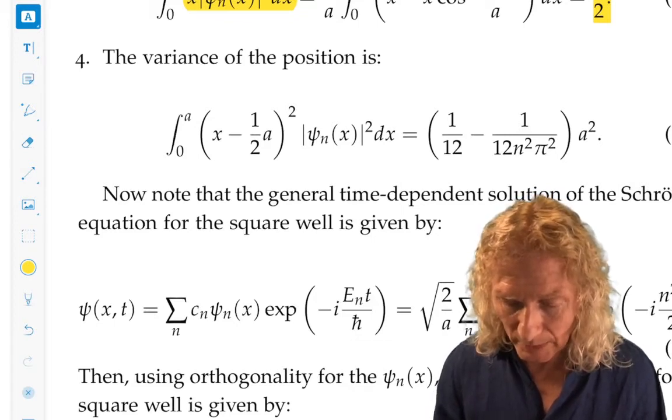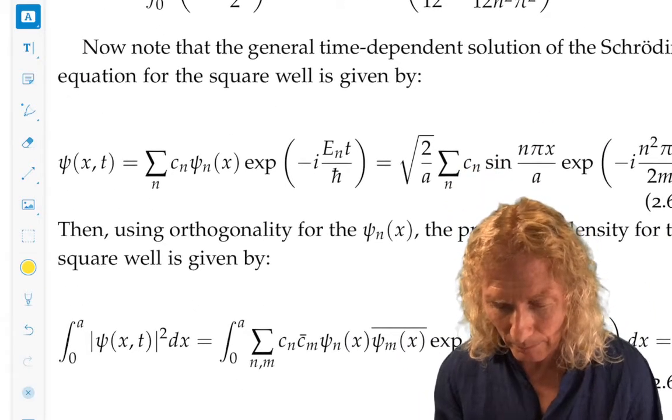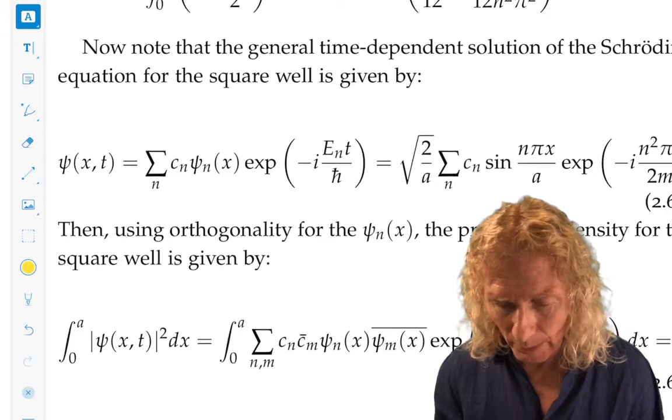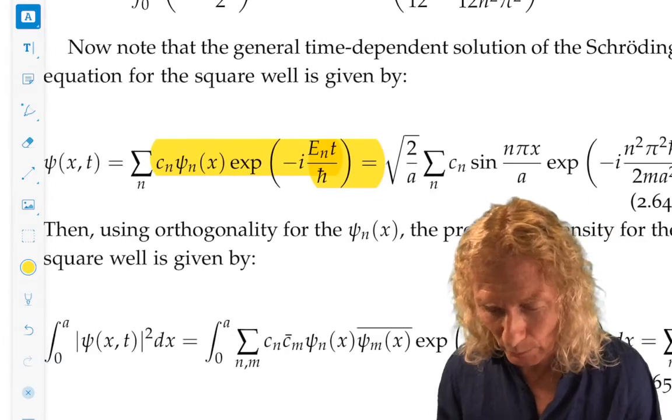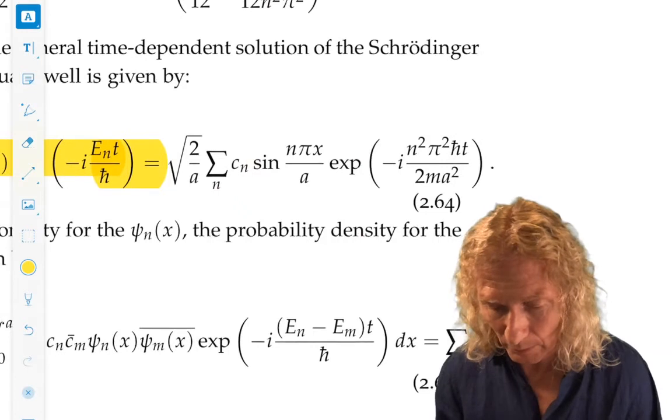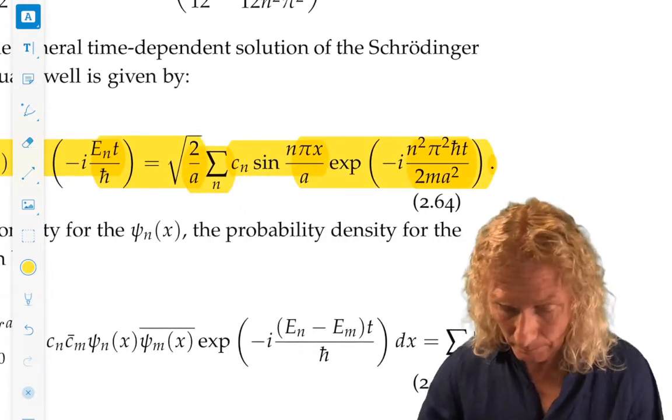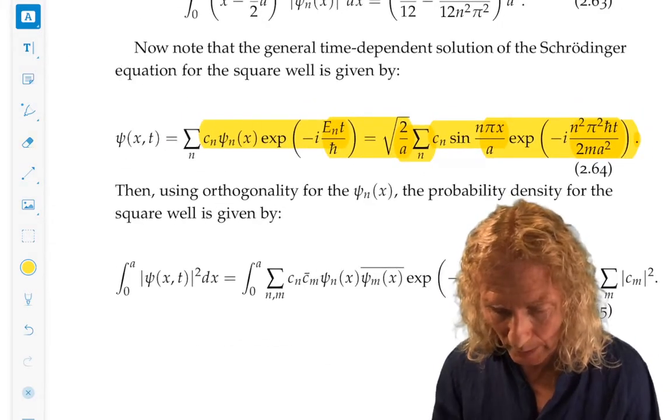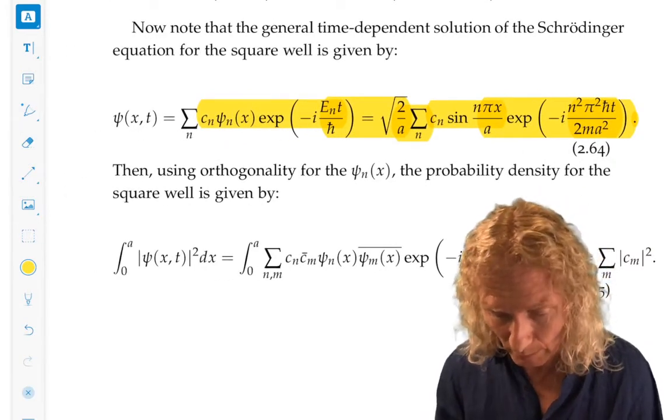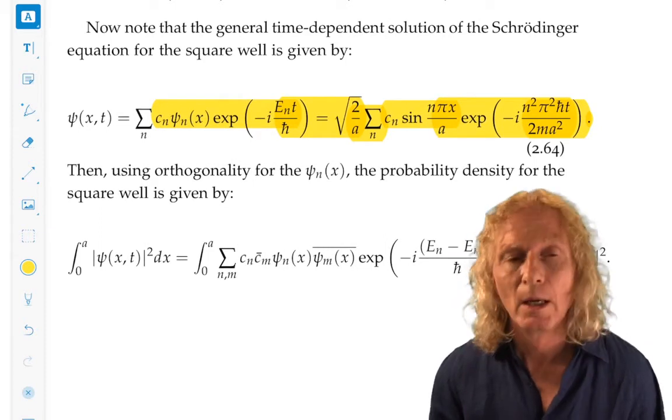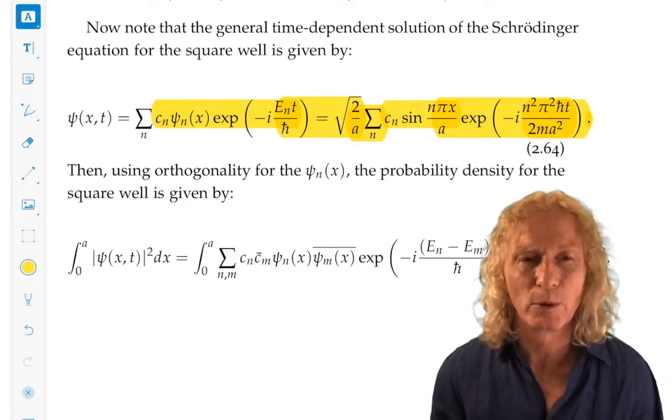So, note that the general time-dependent solution of the Schrödinger equation for the square well is a linear superposition or linear combination. And if we plug in the specific values for psi n and En, that gives us this fancy expression or complicated-looking expression on the right. If we use orthogonality, the probability density for the entire general wave function, we just square this and use the fact that I didn't say this earlier, but this should be familiar to you.